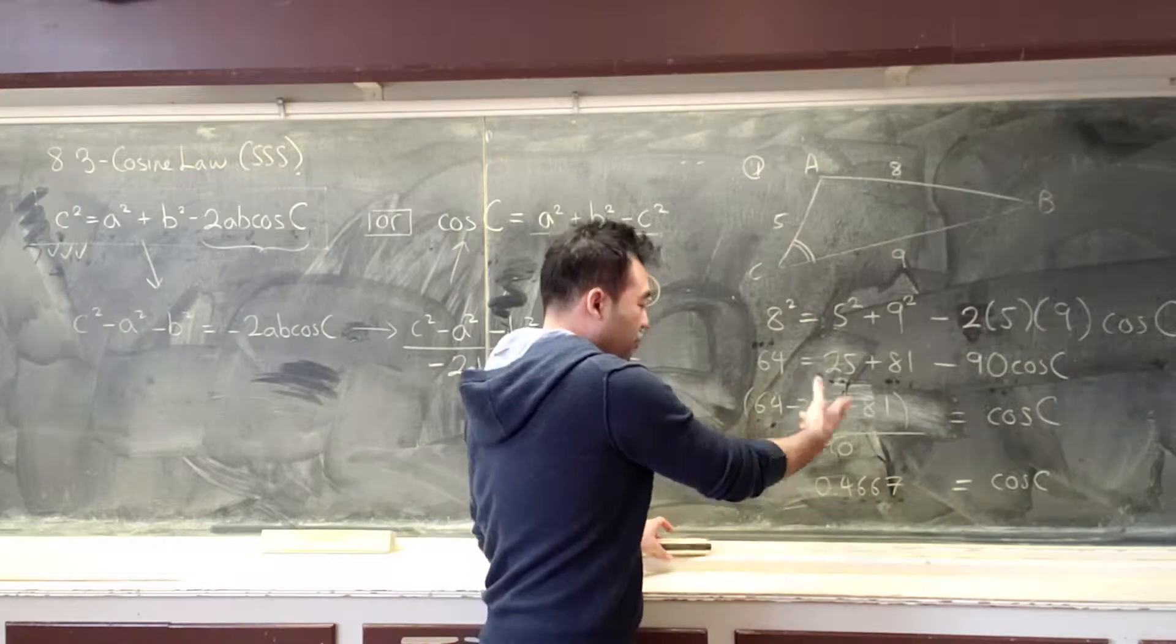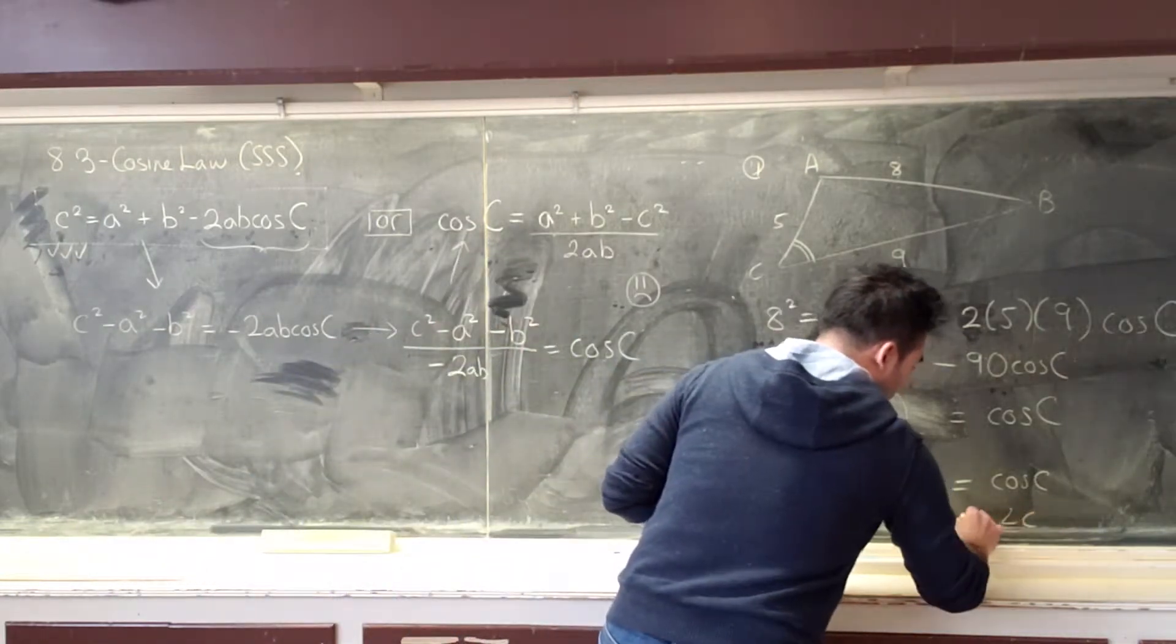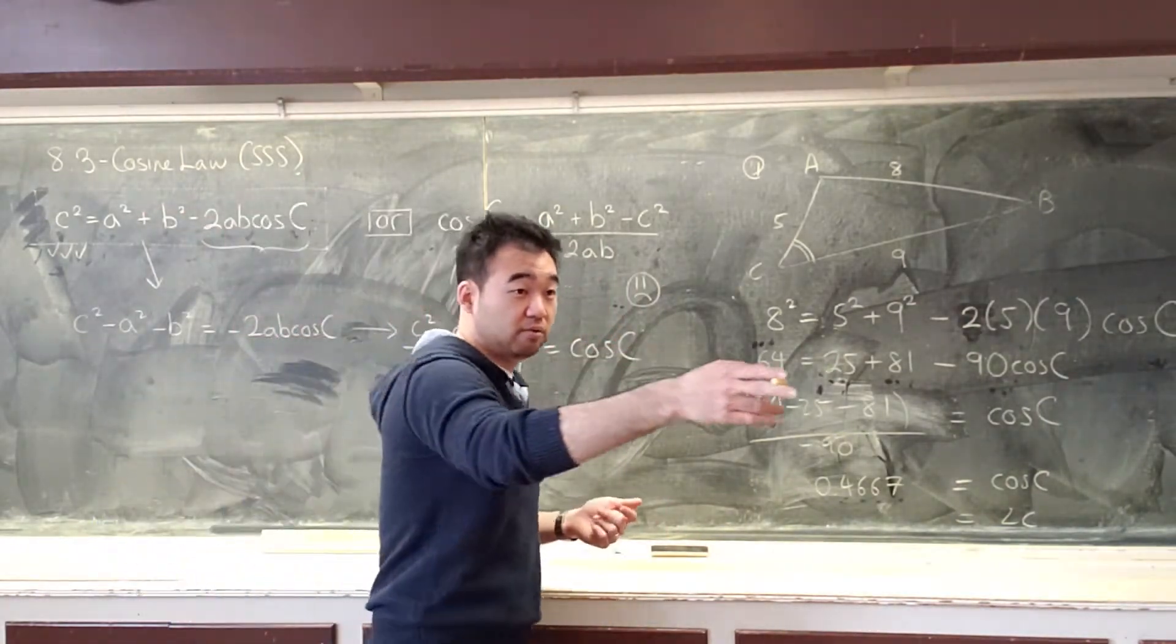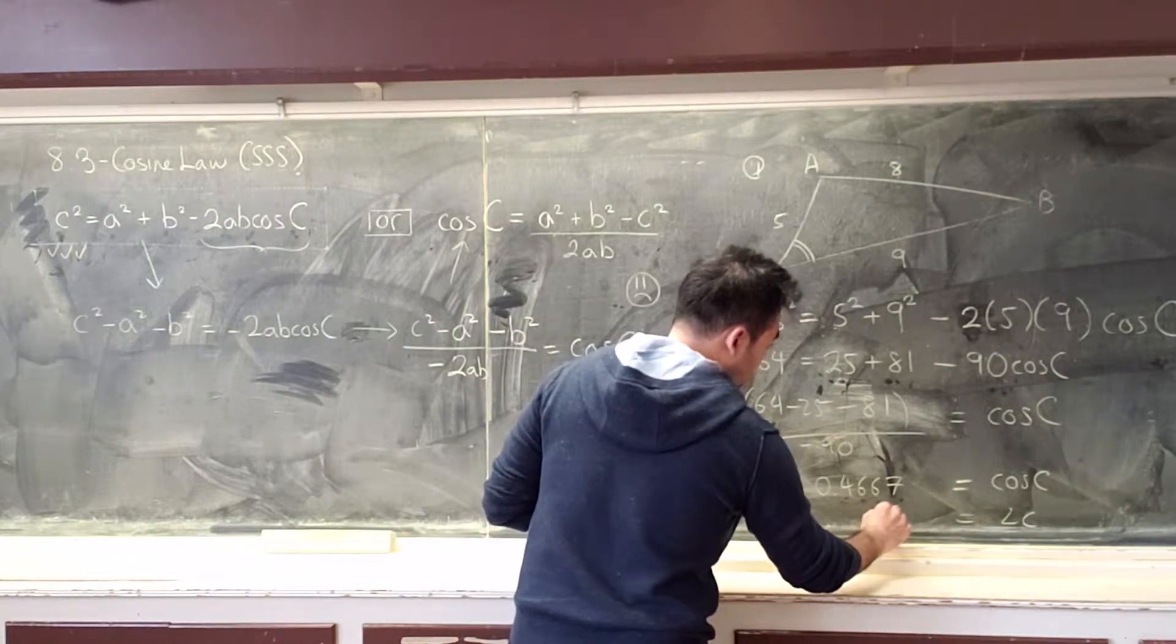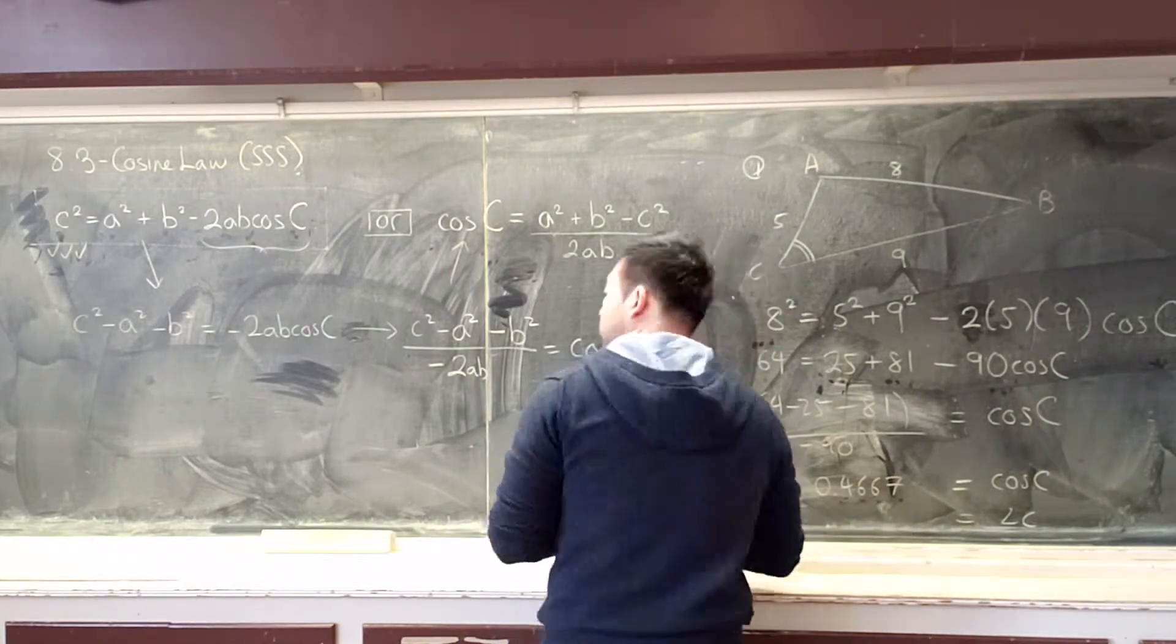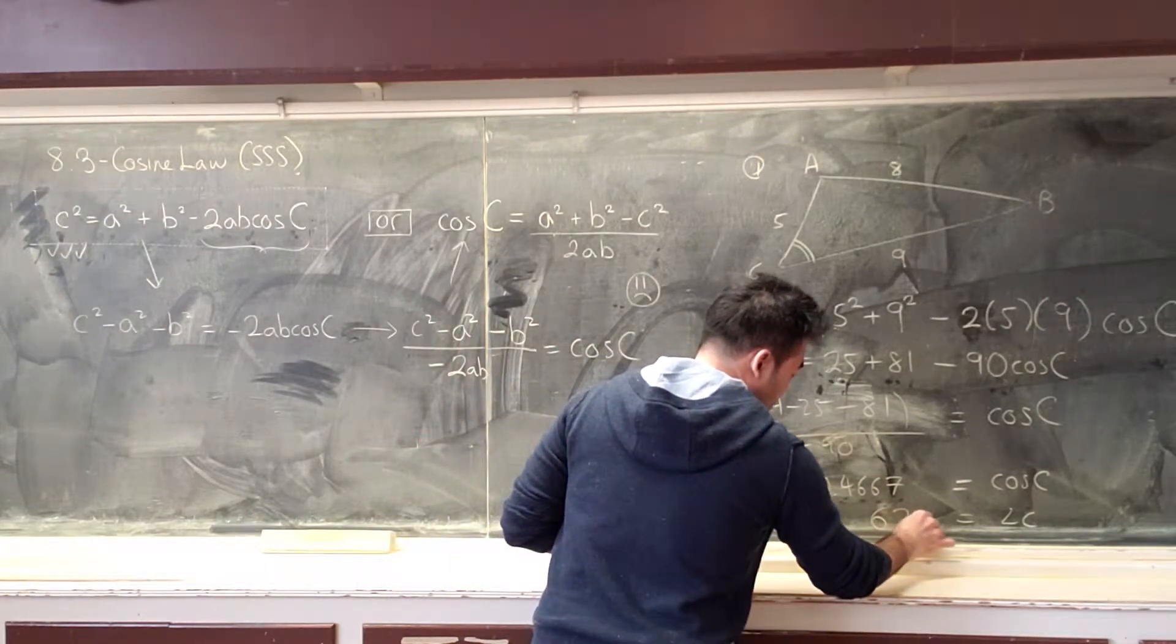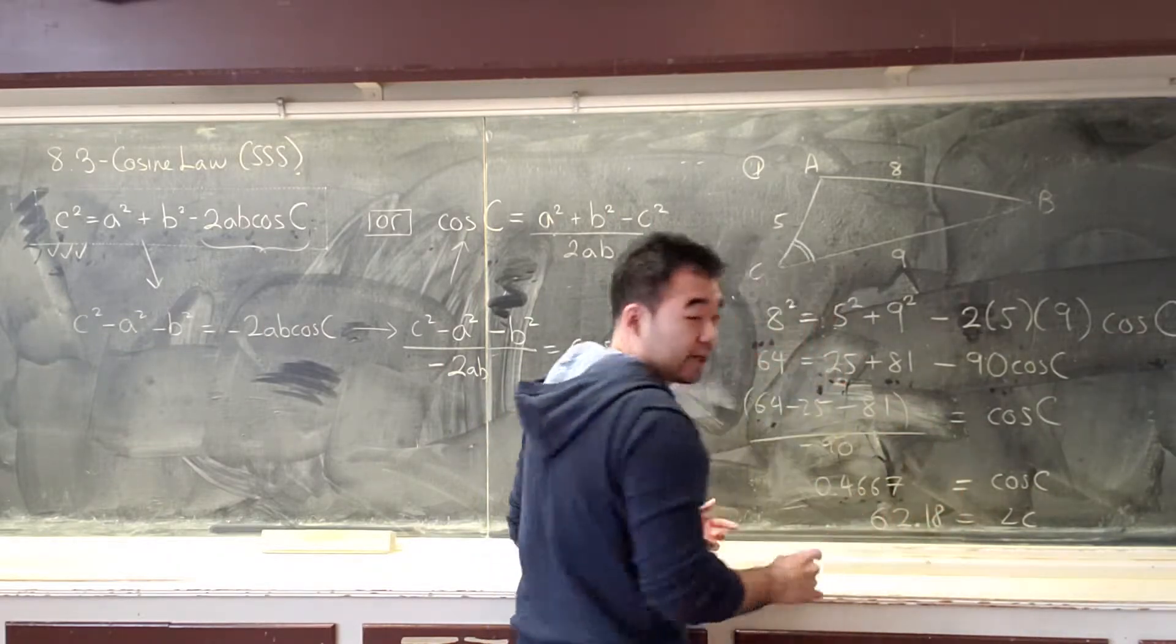If this entire thing is 0.4667 and the angle C is inverse of cosine, which is? You can't just finish it. 62. 62 point? 1, 8, 1. So I'm going to round it to 1, 8.